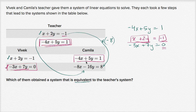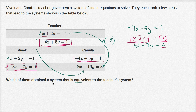Whenever you're dealing with systems, you're not going to change the solution as long as you either multiply both sides of an equation by a scalar, or you add and subtract the equations — meaning you add the left-hand sides and the right-hand sides together, or subtract one from the other on both sides. So both Vivek and Kamala obtained a system that is equivalent, meaning it has the same solution as the teacher's system.